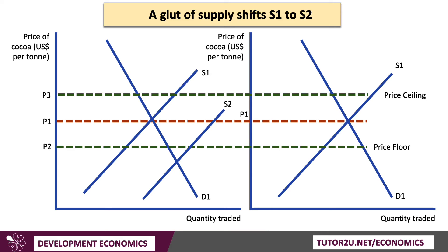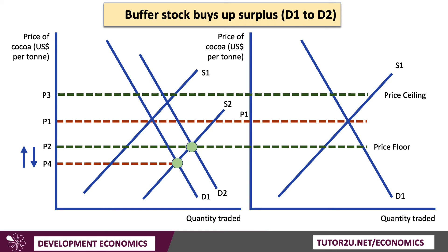What happens if the market changes? On the left-hand side, there's a big rise in supply — cocoa growers find a glut, a much higher than expected yield, causing supply to shift from S1 to S2. Other things remaining the same, that drops the price to P4, which is below the price floor. So when the price is low and supply is plentiful, the Buffer Stock goes into the market and buys up enough quantity to drive demand from D1 to D2 and push the price back up to P2. During times of plentiful supply, the Buffer Stock will be a major buyer of the commodity, buying up surplus stock to keep the price within range.